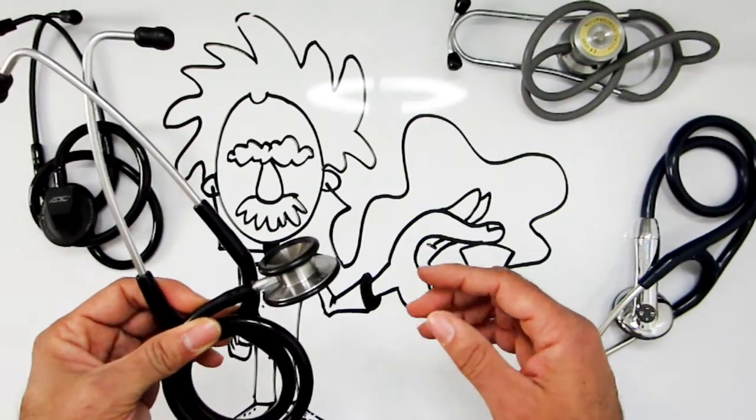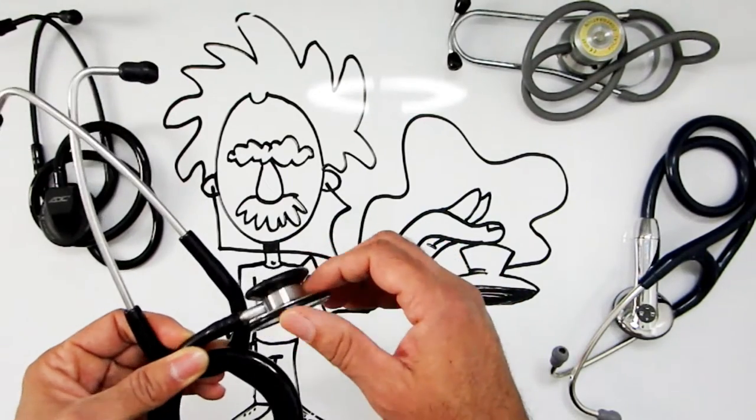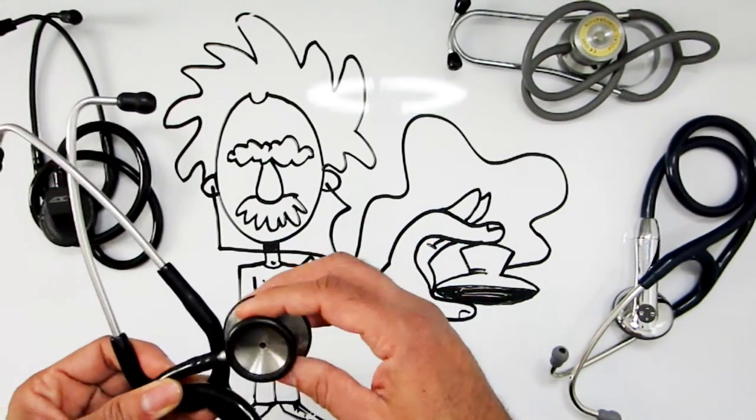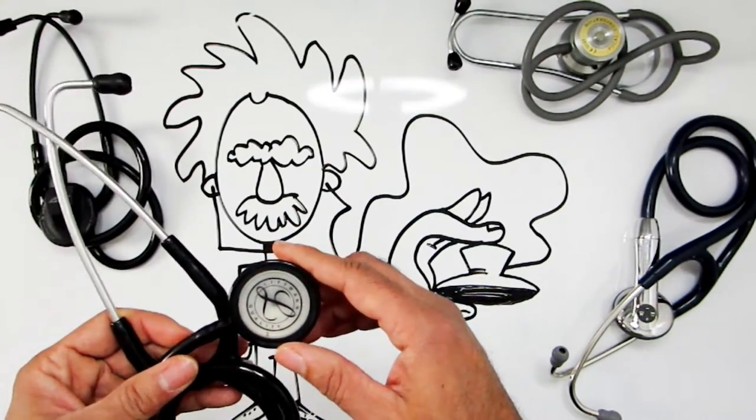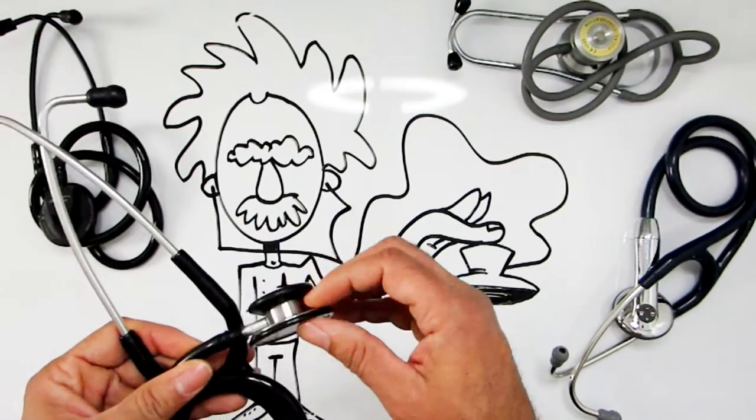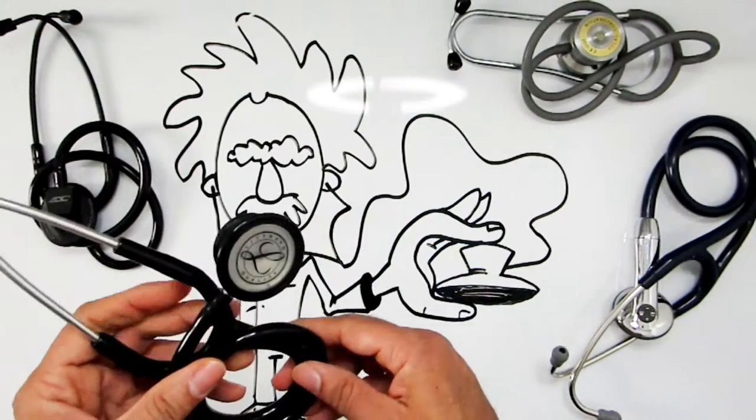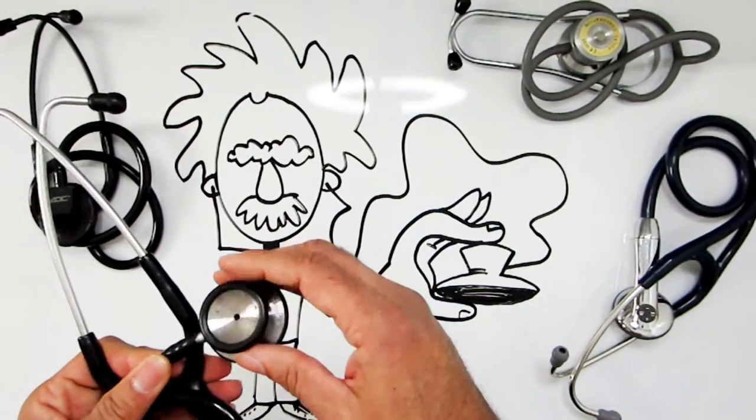My very first stethoscope was this one. It's a Littmann and it has the traditional bell and diaphragm. The bell and diaphragm are basically designed to capture two different ranges of acoustic sounds - one is for high frequency and one is for low frequency. I actually used this for probably around 15 years and it still works to this day.